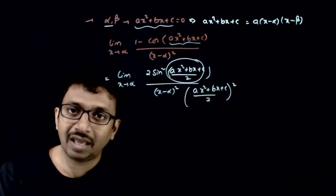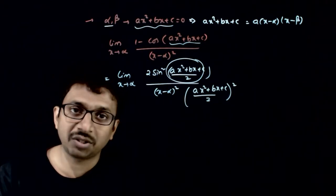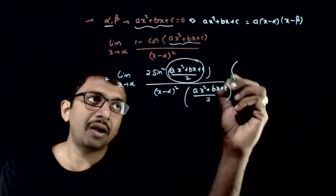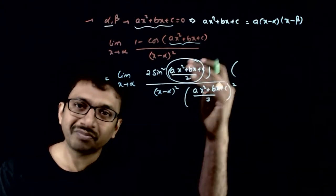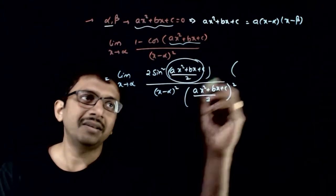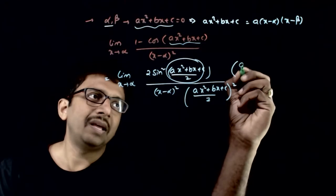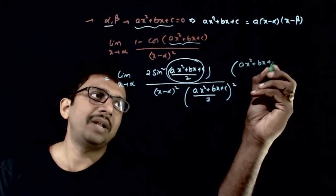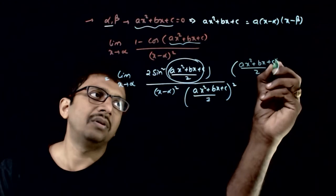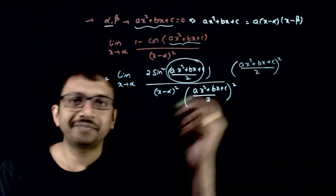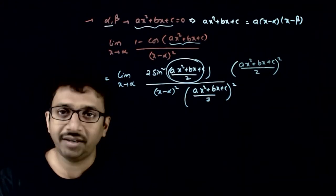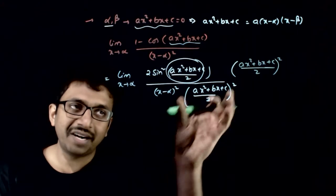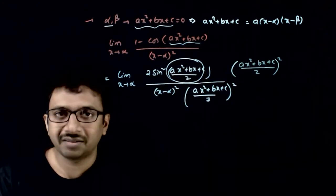I need to divide by (ax² + bx + c) / 2, whole square. If I divide this, I also have to multiply by it — so I am both dividing and multiplying by (ax² + bx + c) / 2, whole square.